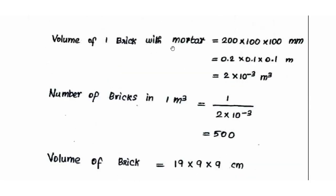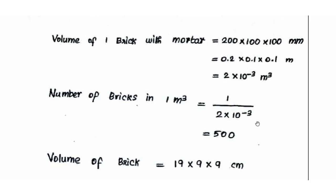The volume of 1 brick with mortar: the volume of 1 brick is 20 × 10 × 10 cm, that is 200 × 100 × 100 mm. In meters, we substitute the volume as 2 × 10⁻³ m³. In 1 m³, how many bricks are there? The number of bricks in 1 m³ = 1 ÷ (2 × 10⁻³) = 500 bricks.